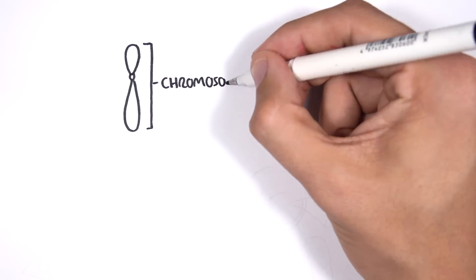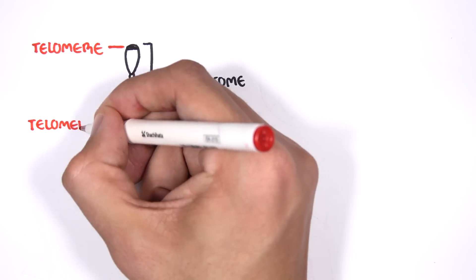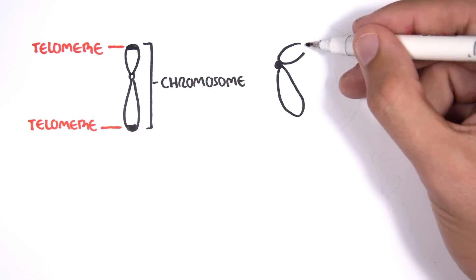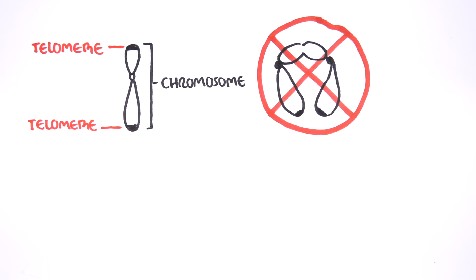Each chromosome is capped by protective stretches of DNA called telomeres, like the plastic ends of shoelaces. Telomeres prevent chromosomes from fraying, forming circles, or sticking to other chromosomes.